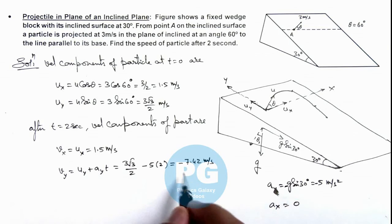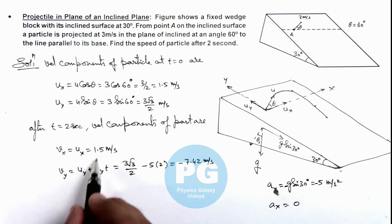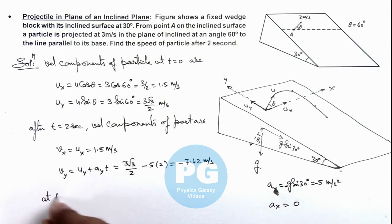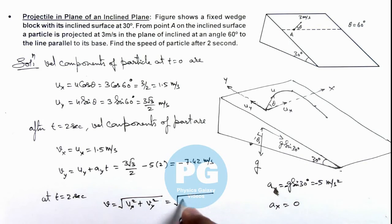So we have got velocity of particle along x and y directions. At t equal to 2 seconds, the speed of particle we are required to find, that is equal to root of vx square plus vy square. This is root of 1.5 square plus 7.42 square. On further simplifying we'll get it as 7.55 meters per second, which is the final answer for this problem.